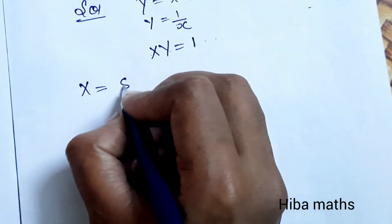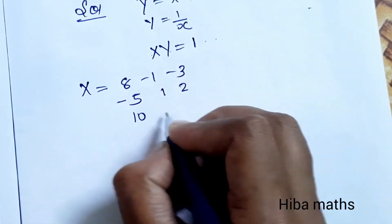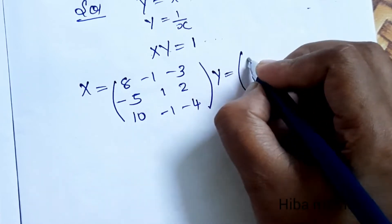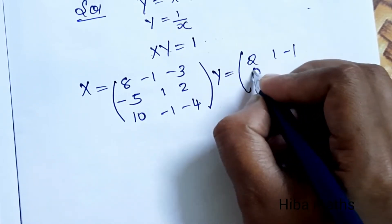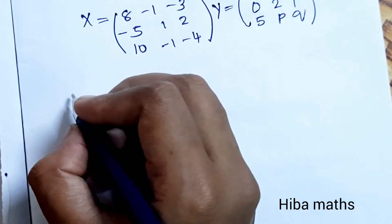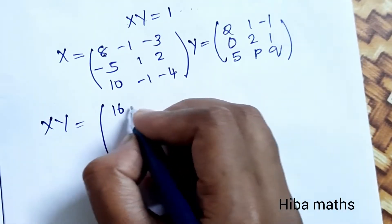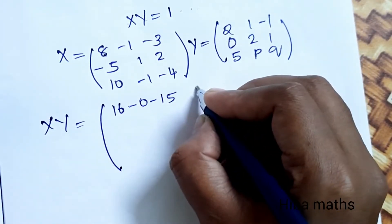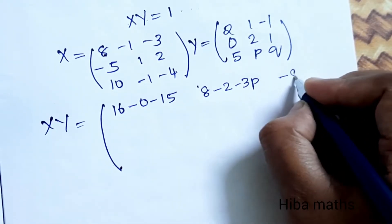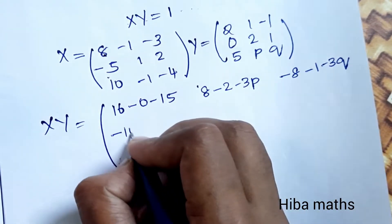So X times Y must equal the identity matrix. Computing the multiplication: 1×8 ones are 8, minus 2, minus 3, P; minus 8, minus 1, minus 3Q, minus 10 plus 0 plus 10.